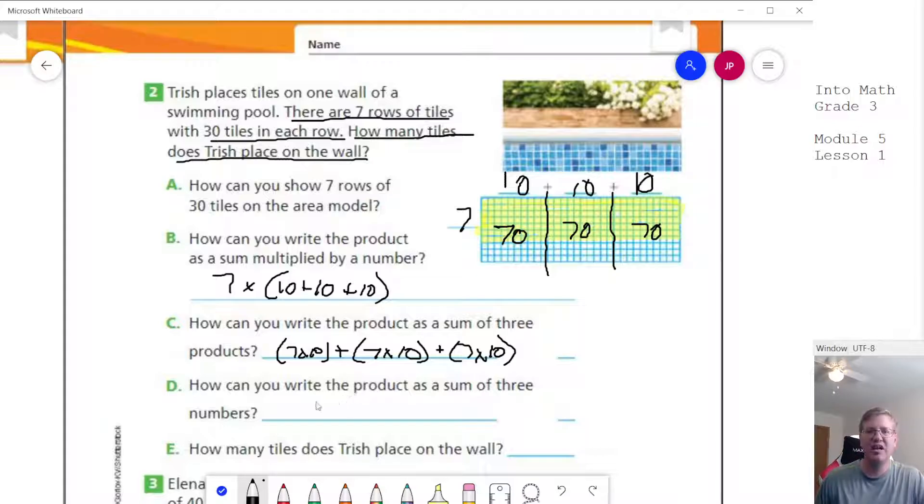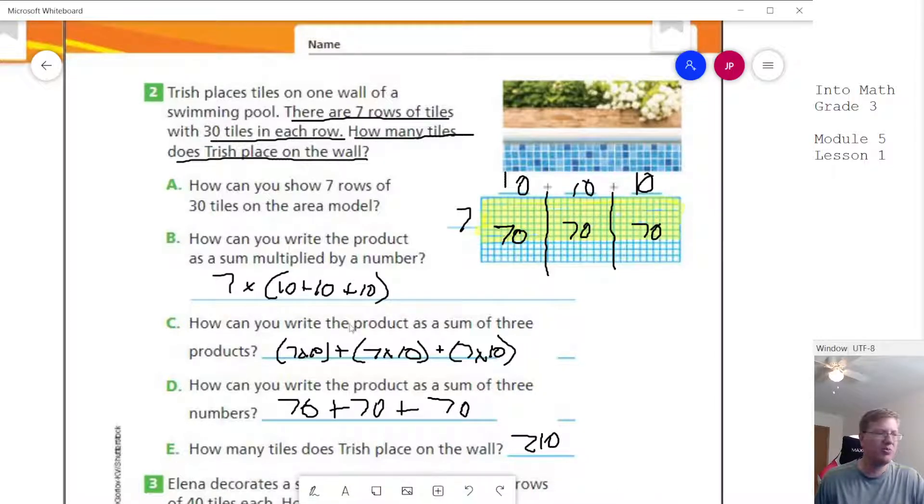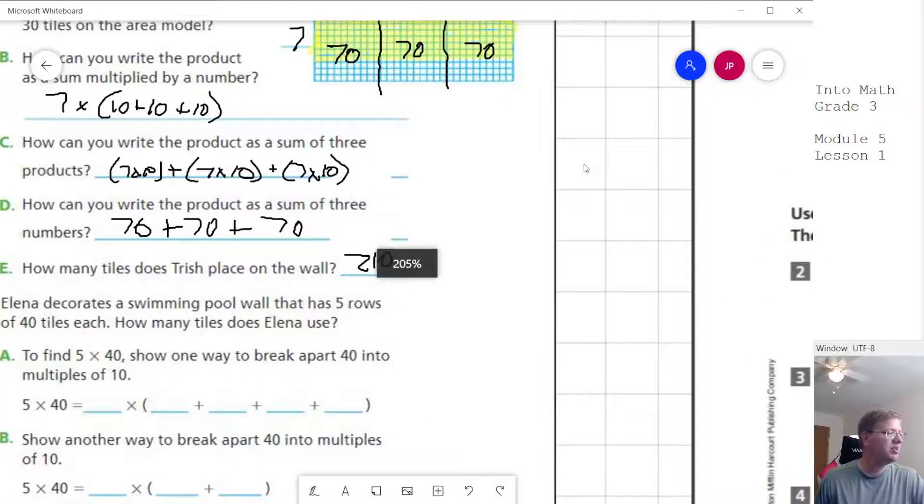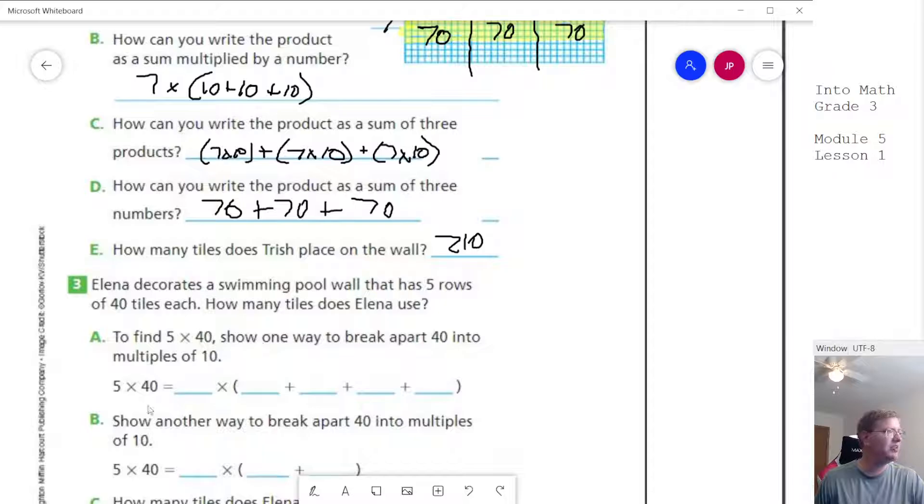And then write the product as the sum of three numbers. We could do that as 70 plus 70 plus 70. And we would get 210 for the answer when we're done. I am going to skip the one at the bottom just for the sake of time. I am going to say that this works very similarly to this.